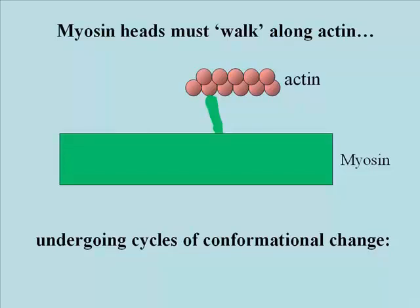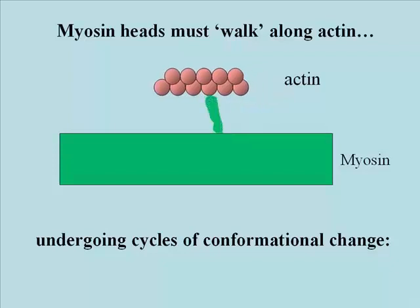We have a cartoon here with a bit of actin and a chunk of myosin and a green head. What we imagine must happen is that the myosin undergoes several stages in a cycle of conformational change that pulls the actin along. A myosin head bound to actin became unbound, shifted in position, changed its conformation, and in its new conformation it could bind actin again — but this time it bound an actin monomer further along the actin filament. The actin is drawn along the myosin because the myosin head changes conformation once more back to the original shape and angle.